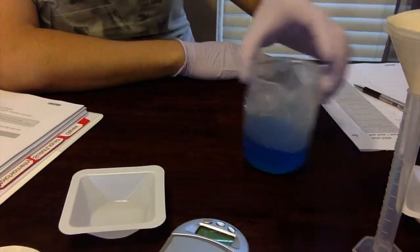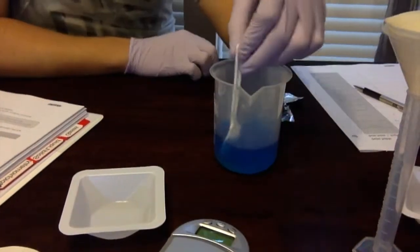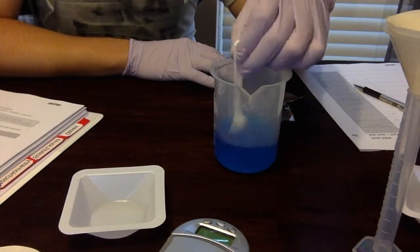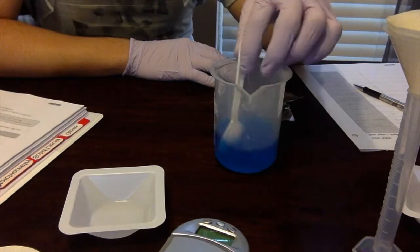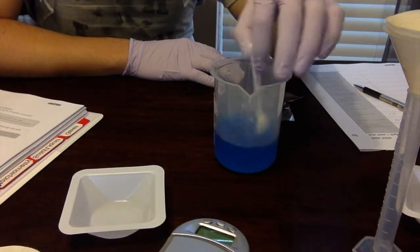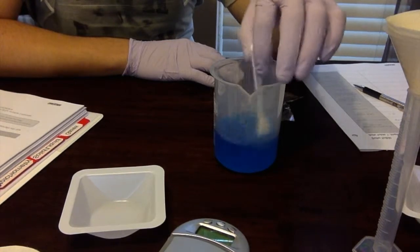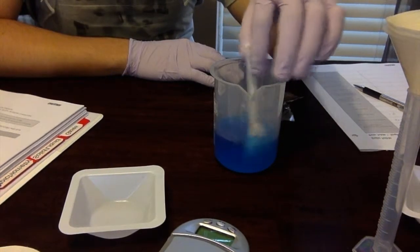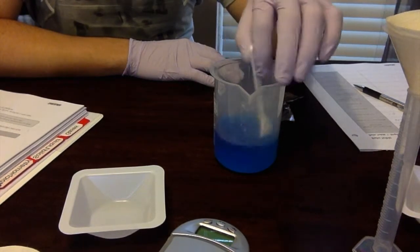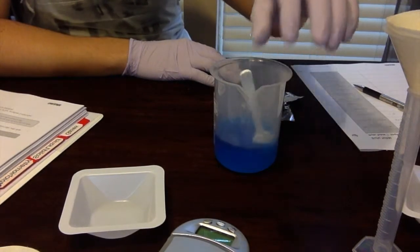And using our plastic spoon, we're going to stir the salt until it fully dissolves into the copper sulfate. Now the exact amount of salt is really not important since we're using this as a catalyst. So don't worry about being specific or using exactly 1.2 grams. All right, now that the salt's fully dissolved into the copper sulfate,